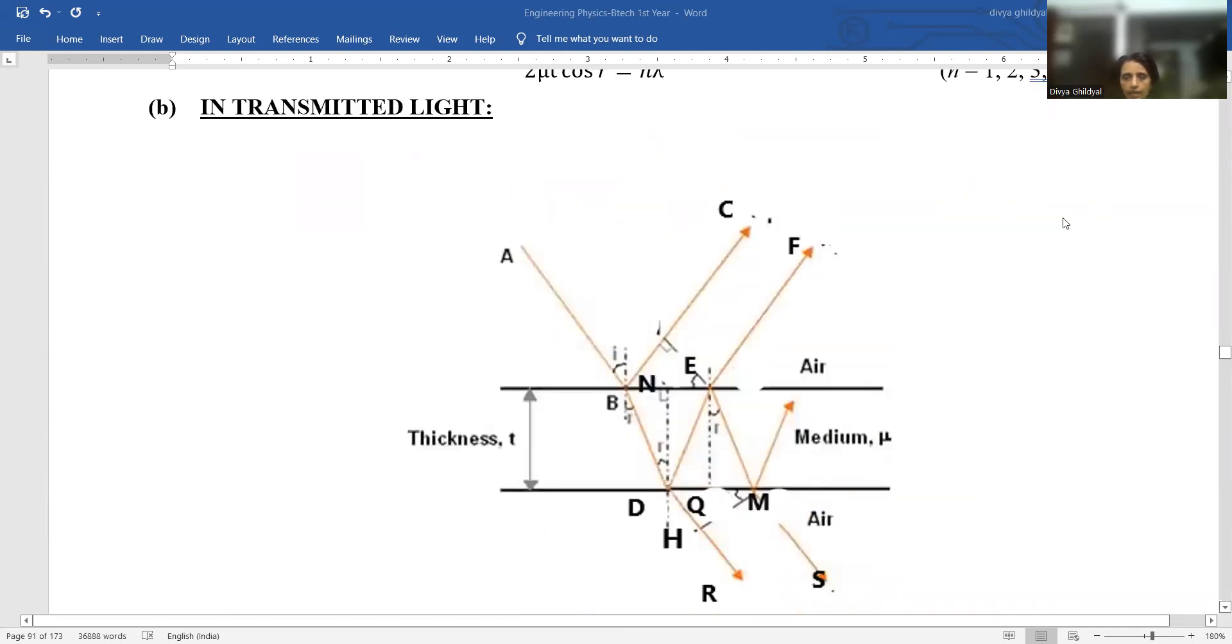Now let us first look at the ray diagram. A, B is your incident light, thin film of thickness T and part of it is partially reflected along BC, part of it is refracted along BD and this medium not being opaque, part of it gets transmitted out via DR.